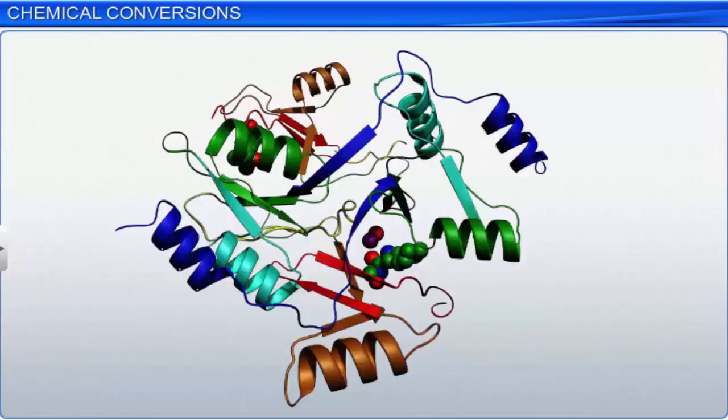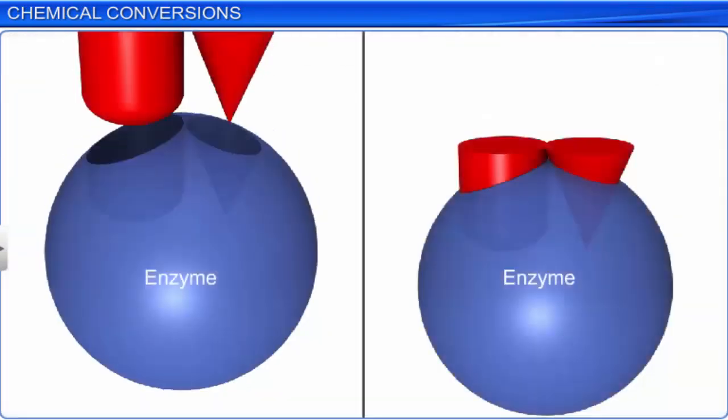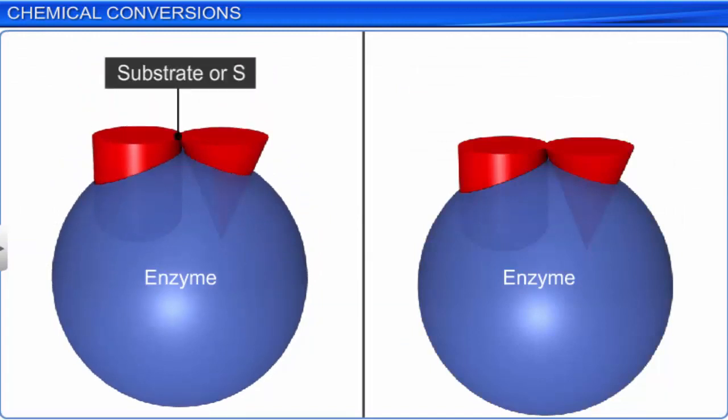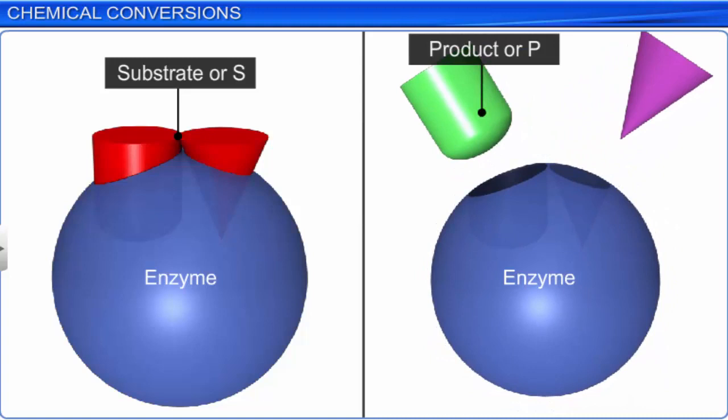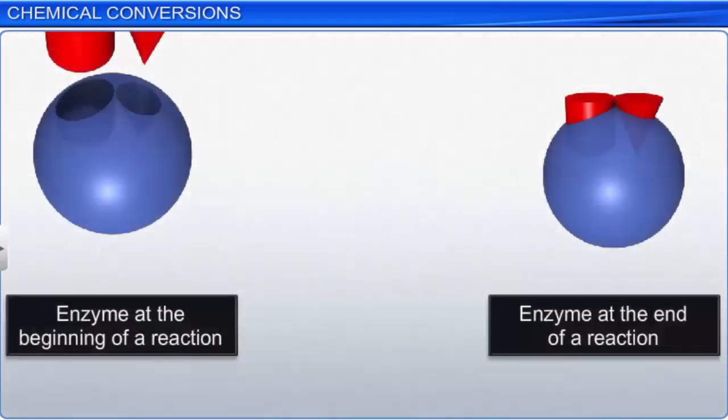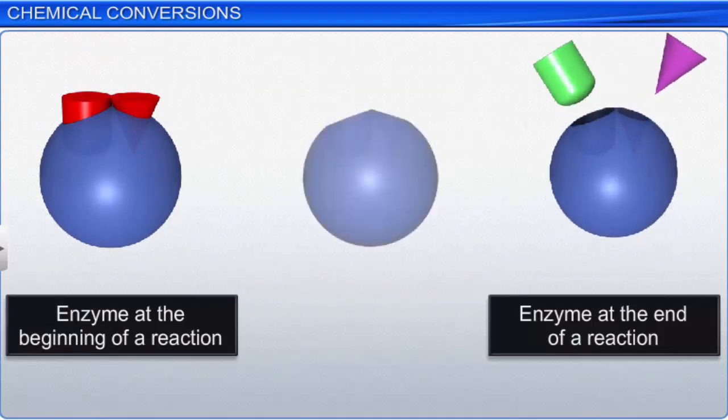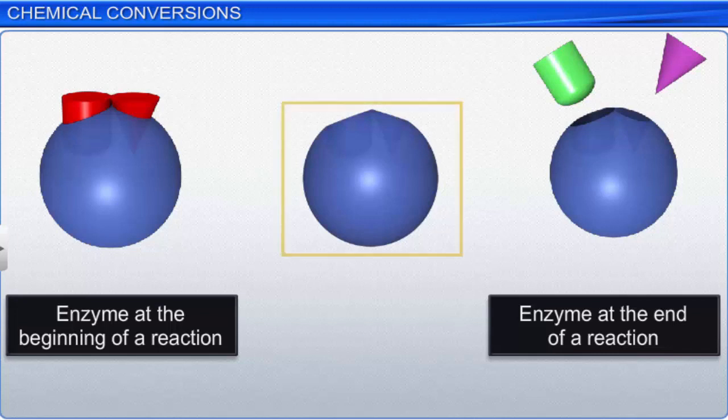Enzymes are three-dimensional protein structures with an active site. They convert a chemical or a substrate, denoted as S, into a product or P. One or more products can be formed from a single or many substrates. Enzymes help in catalyzing the reactions, but they do not participate in the reaction themselves. In other words, at the end of any reaction, the enzyme remains unaltered and is ready to be used by another molecule.